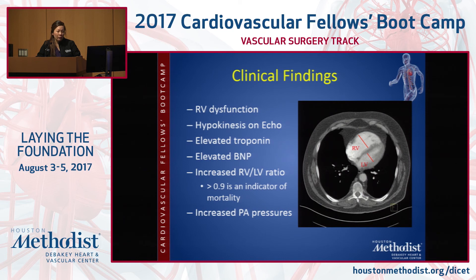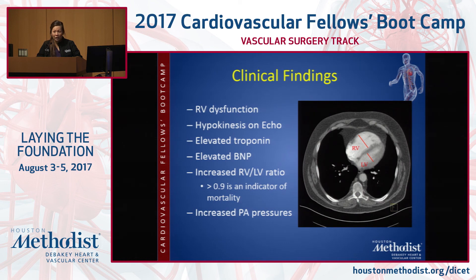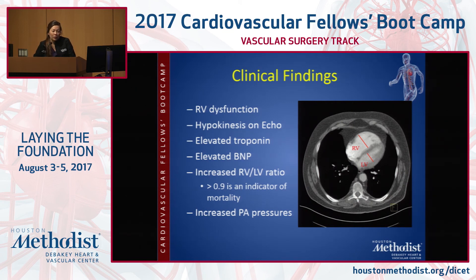Clinical findings for massive and submassive: you'll see RV dysfunction on echo and elevated troponins, BNP, and an increased RV-LV ratio. Before I came here as an attending, we never did PE lysis or any of this — it was all medicine and interventional radiology where I trained. So your first year out of fellowship is the highest learning curve you'll ever have. An increased RV-LV ratio — which you can look at on echo or CT — if it's greater than 0.9, that's an indicator of mortality. And then increased PA pressures.